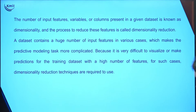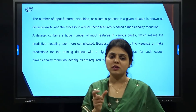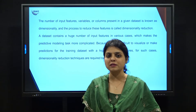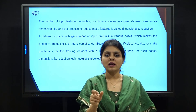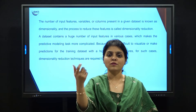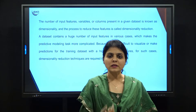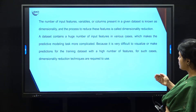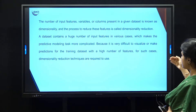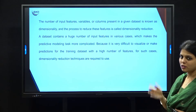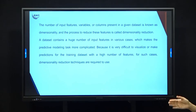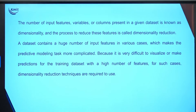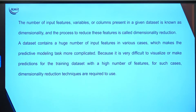When we talk about a machine learning model, data is usually represented in rows and columns — a CSV file or an Excel file. The columns contain the features or variables, whereas rows have the values or instances. The number of features, variables, or columns present in the dataset is known as dimensionality, and the process of reducing these features is called dimensionality reduction.